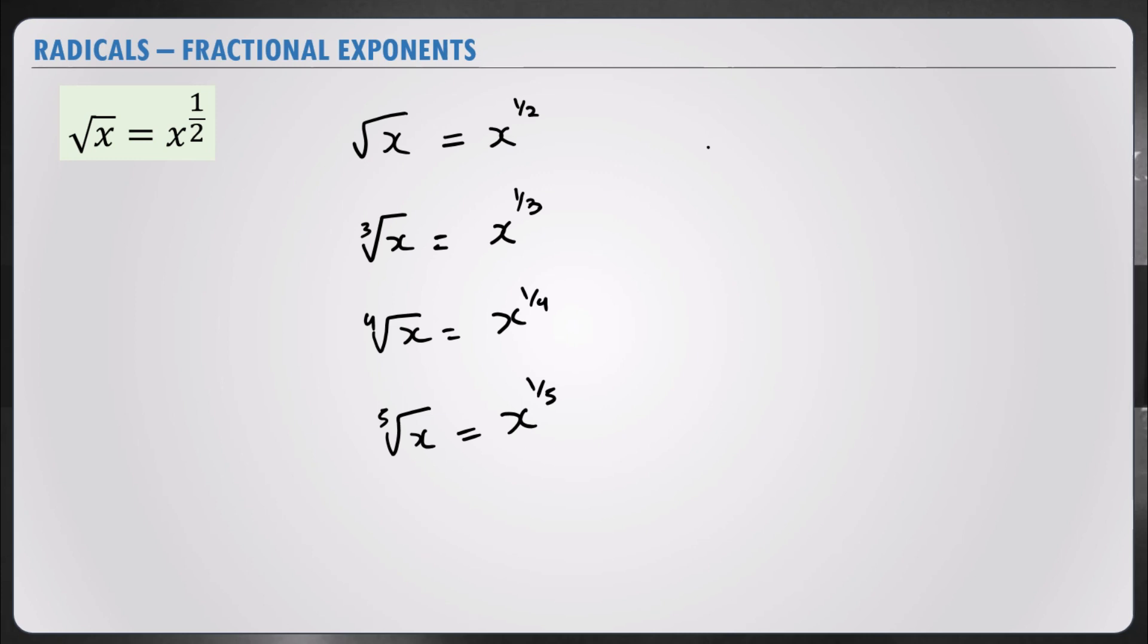Let's recall the square root of 4 is actually, according to this, 4 to the power of half. Think of it that way. It will make your work much easier, which is 2 to the power of 2 times half.